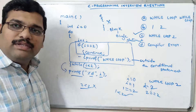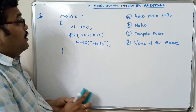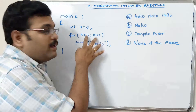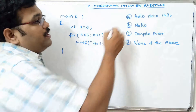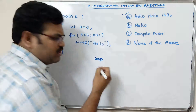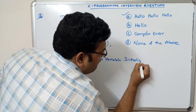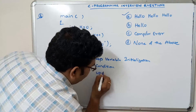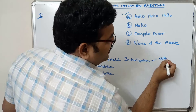Let us move on to the third question. In the main function a variable is initialized to zero, and in the for loop only two parts are present: the condition and the increment — no initialization inside the for parentheses. Printf hello is inside. Most people will go for 'hello hello hello' because in any iterative statement there must be loop variable initialization, condition, and updation — and the loop variable initialization can be outside the loop.